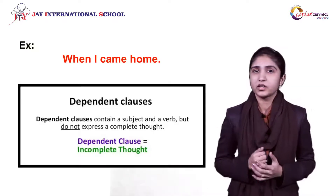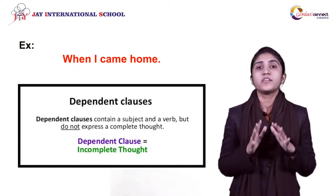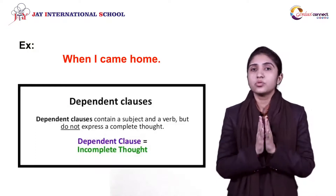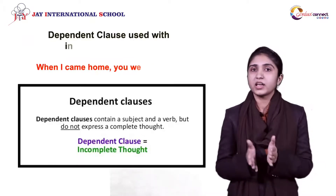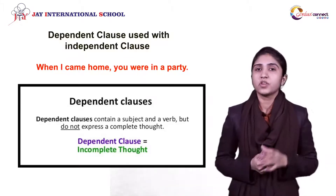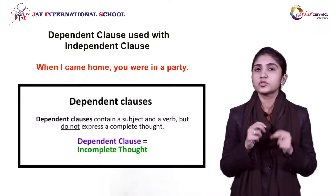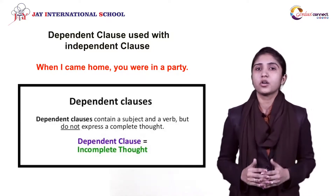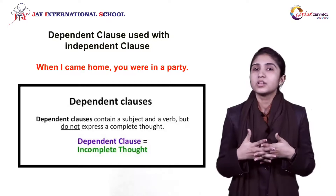A dependent clause cannot stand on its own unless you add the remaining part of the sentence. If I join an independent clause and a dependent clause, it is definitely possible to use a dependent clause in a sentence — like 'When I came home, you were in a party.' One is dependent and one is independent. You cannot use two dependent clauses alone in a sentence; you need an independent clause to fulfill the meaning, otherwise it is meaningless. So this was all about phrases and clauses. Thank you.